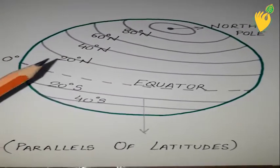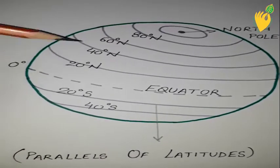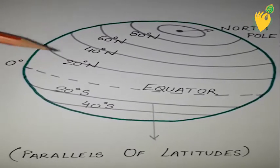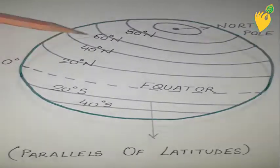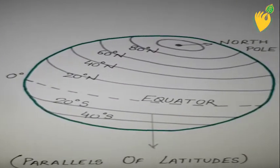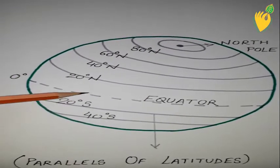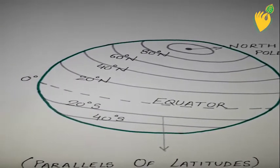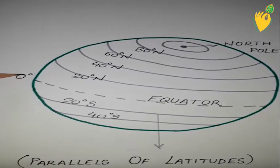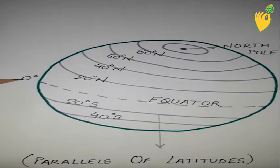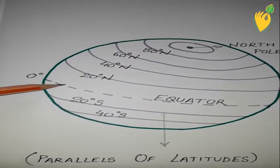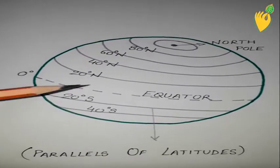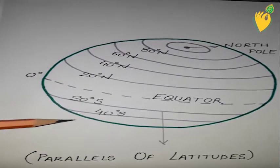For reference, the degrees shown in the northern hemisphere are 20, 40, and a few more. An important point to keep in mind is that the equator is the starting line of all the parallels of latitude. Therefore the equator has a degree of zero — it is considered the starting point of all parallels of latitude.